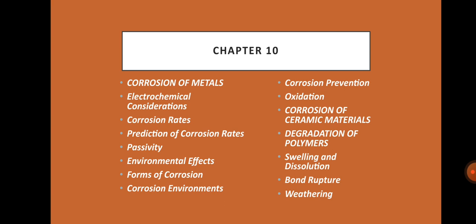Here are the topics under Chapter 10: Corrosion of Metals, Electrochemical Consideration, Corrosion Rates, Prediction of Corrosion Rates, Passivity, Environmental Effects, Forms of Corrosion, Corrosion Environments, Corrosion Prevention, Oxidation, Corrosion of Ceramic Materials, Degradation of Polymers, Swelling and Dissolution, Bond Rupture, and Weathering.